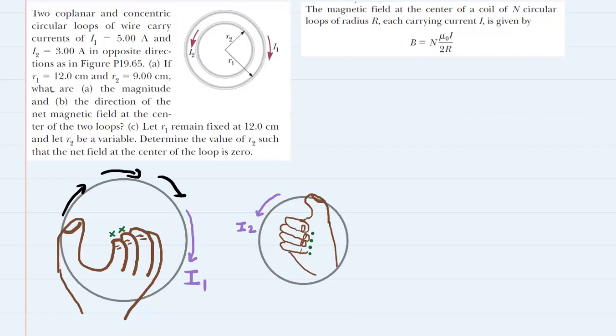In parts A and B of the question we are asked to determine the magnitude and direction of the net magnetic field at the center of the loops. Before we make a calculation we want to make sure we understand the direction of the two magnetic fields that are produced by these current carrying loops.